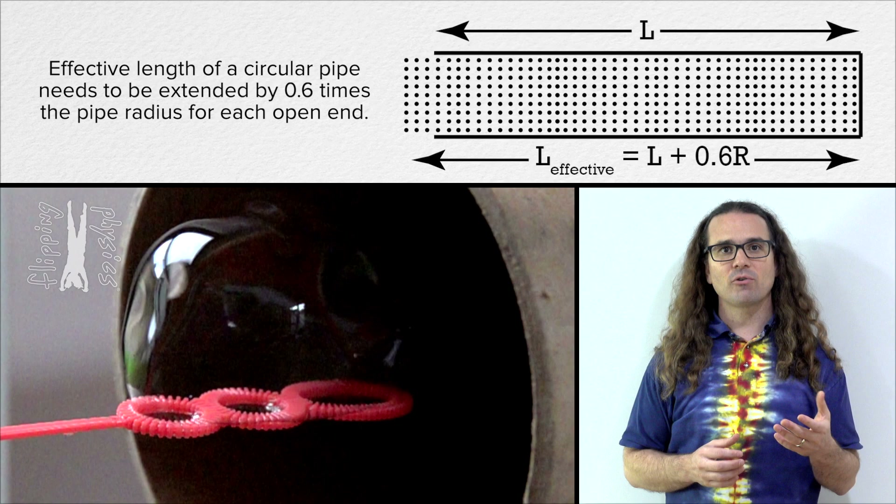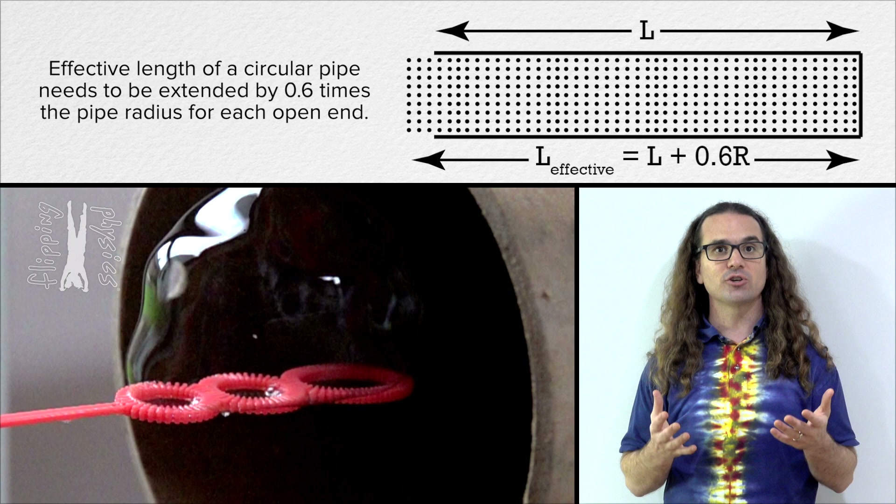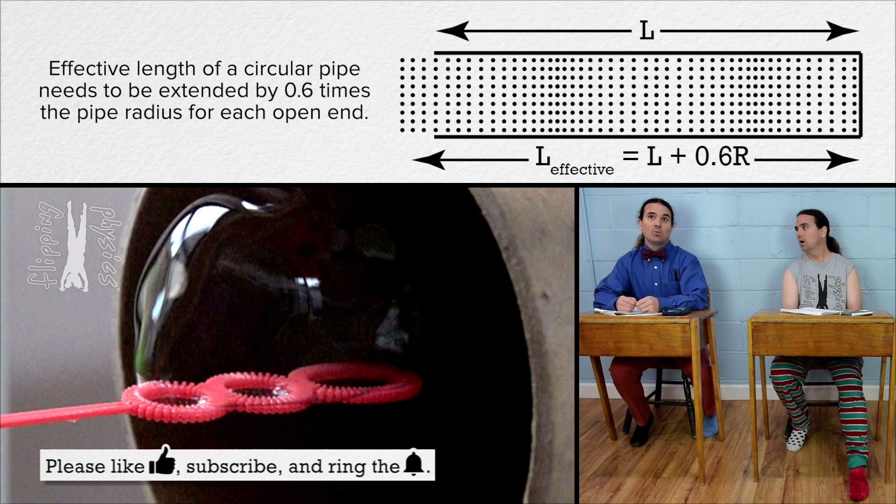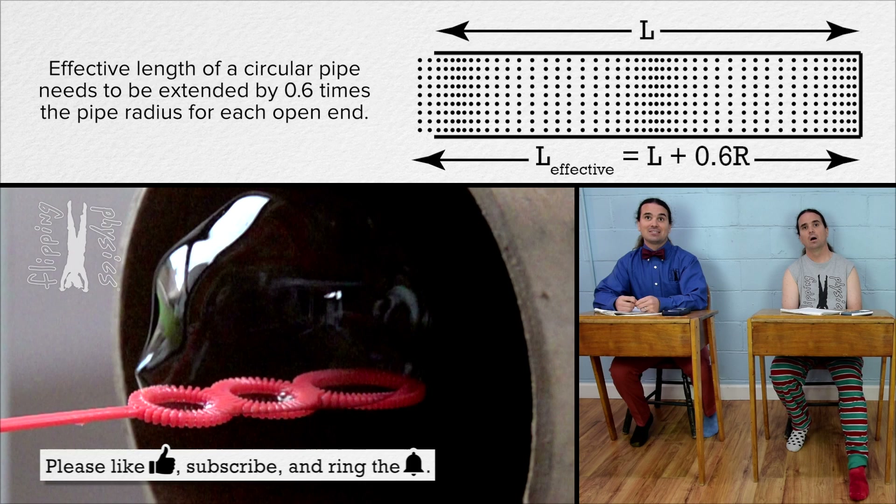The effective length of the oscillating air column in a wind instrument is a little longer than the measured length of the pipe. For a circular cross-section pipe, an end correction of 0.6 times the radius of the pipe must be added for each open end. For a closed pipe, add 0.6 times the radius; for an open pipe, add 2 times 0.6 times the radius, because an open pipe has two open ends. Thank you very much for learning with me today.